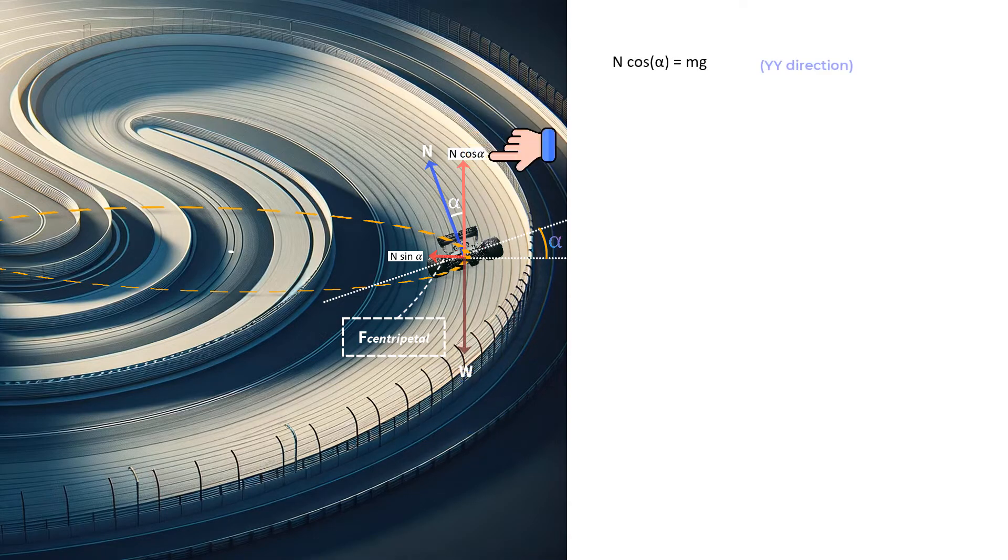So with this information, we can write the F equals Ma equation for this car as follows. On the left hand side, we have the net force acting towards the center as N sin α. And this should equal the product of mass of the car and acceleration. And we know that acceleration is centripetal and is written as V squared upon R, where V is the car's velocity and R is the radius the turning curve makes.